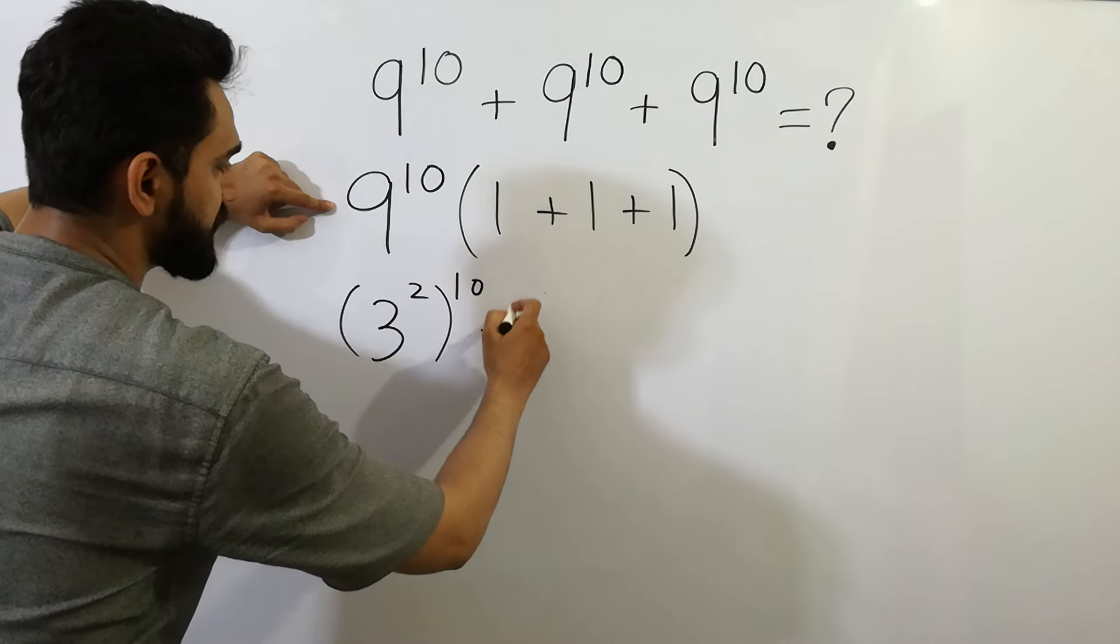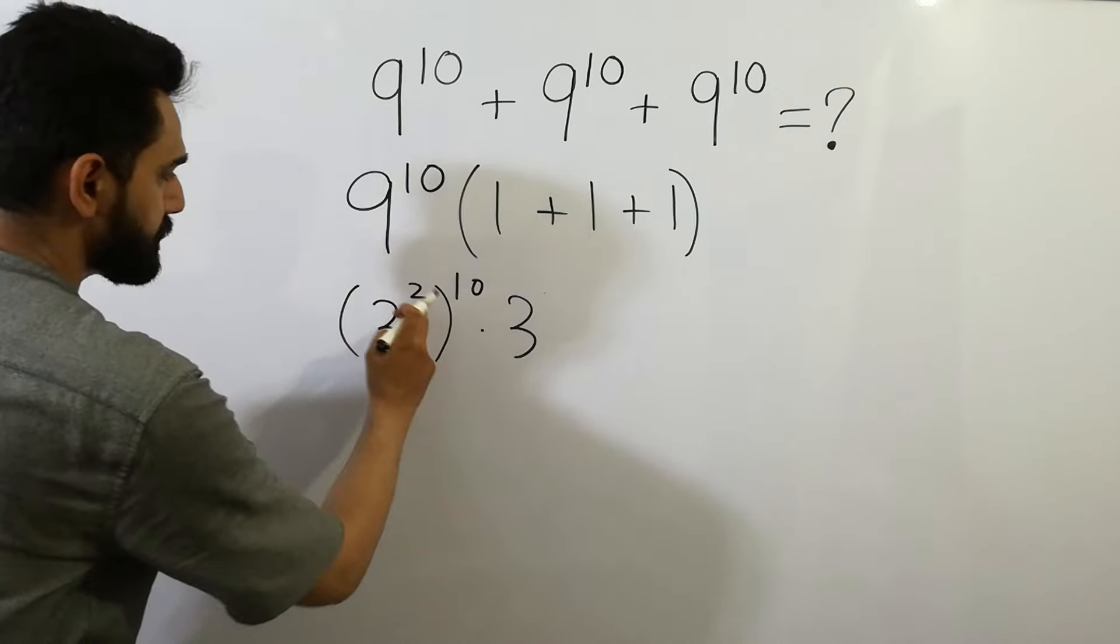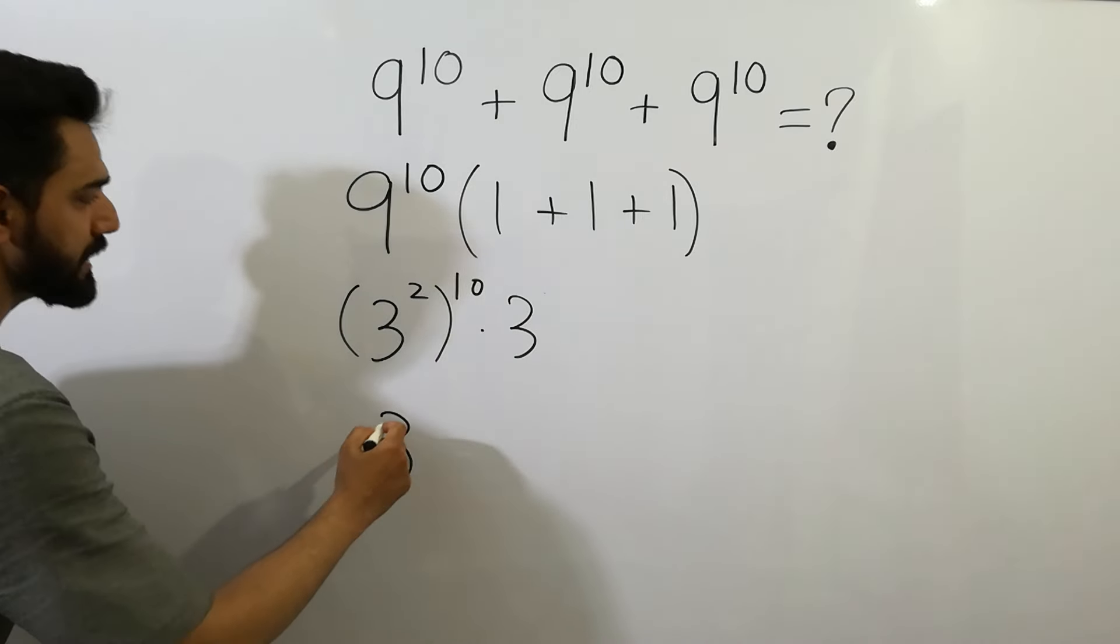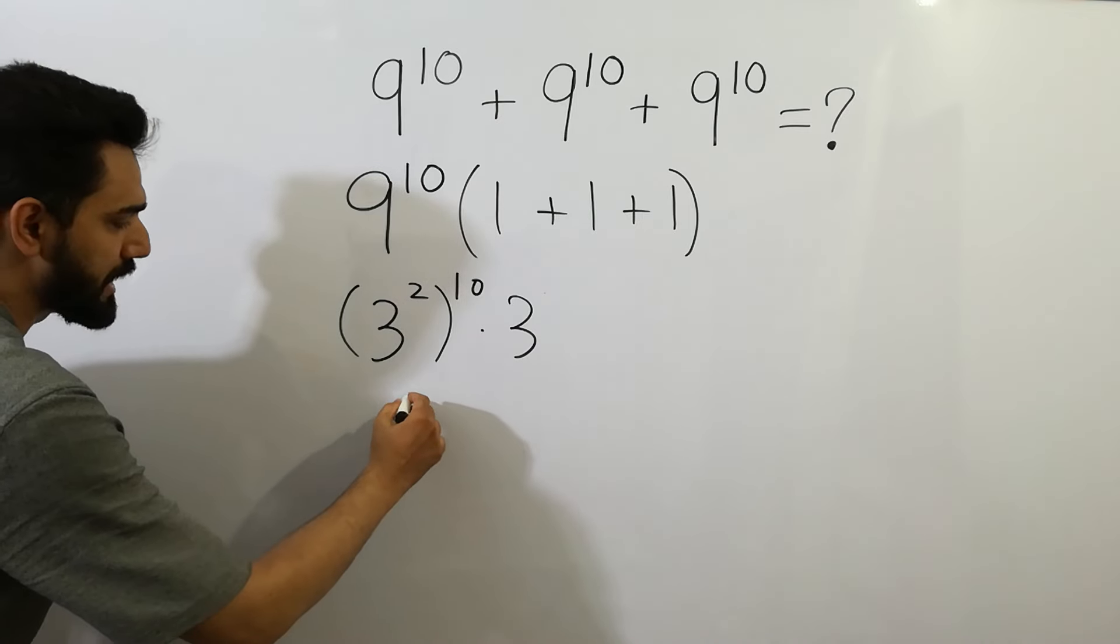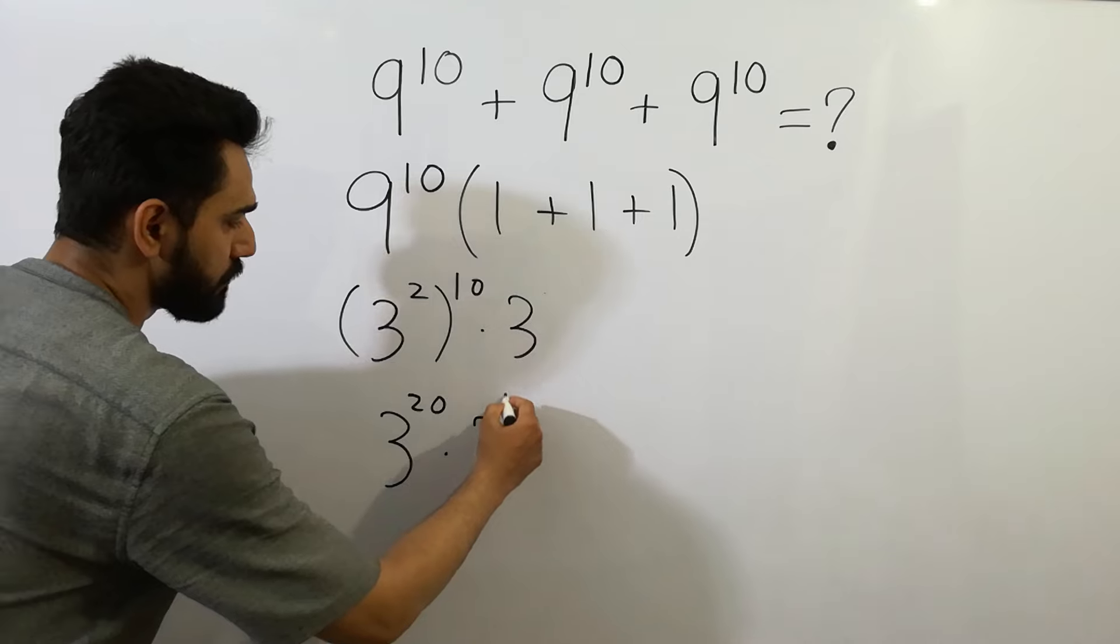This gives us 3. Next, 10 times 2, we get 20. So here we have 3 to the power 20 times 3 to the power 1.